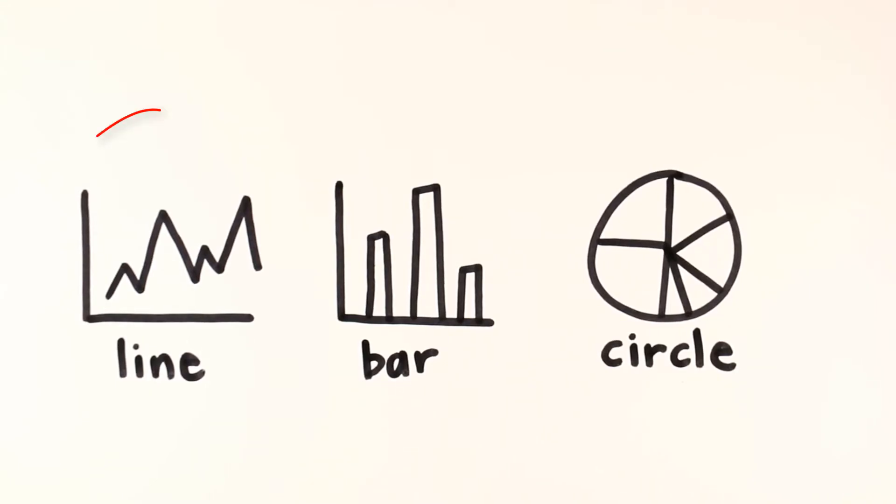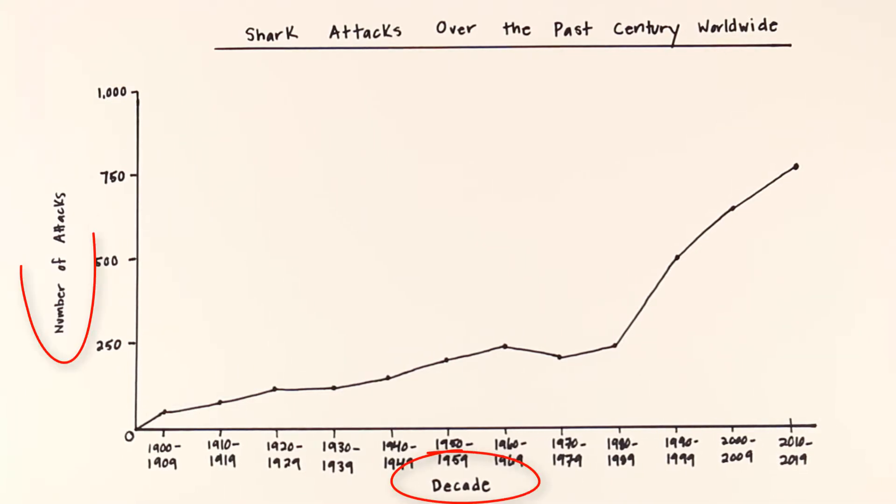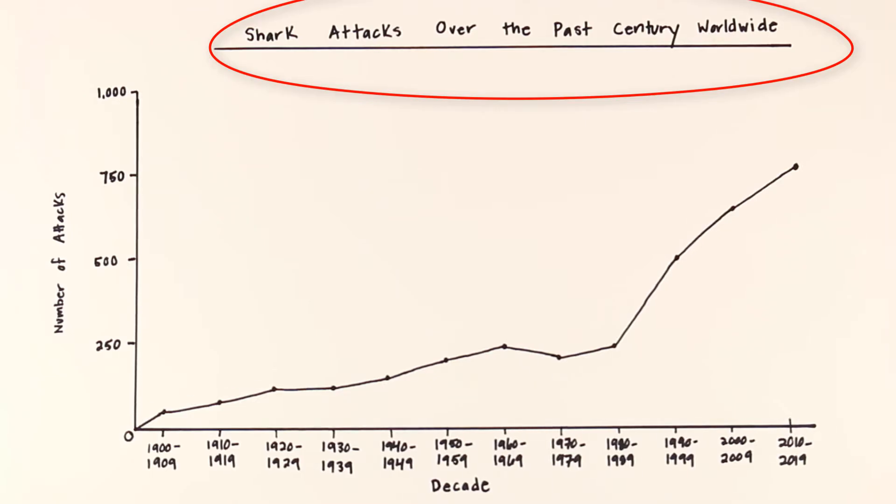The first type of graph we'll discuss today is the line graph. Let's take a look at the information you can find on a line graph. Line graphs often show changes over time or compare multiple things. First look at the title of the graph. It tells you what the graph is about.